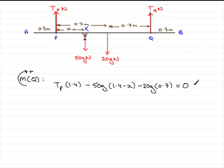So all I need to do now is just clean this up and rearrange it for the tension TP. So if we clean this up, we've got for the first term 1.4TP.